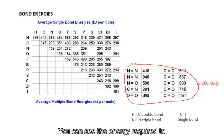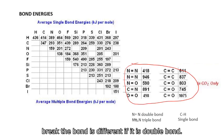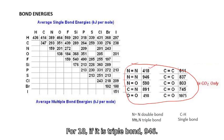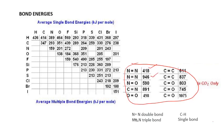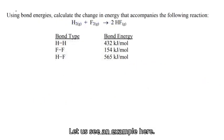You can see the energy required to break the bond is different. If it is double bond, 418. If it is triple bond, 946. So that is different. And we will use these values in the calculations. So let us see an example here.